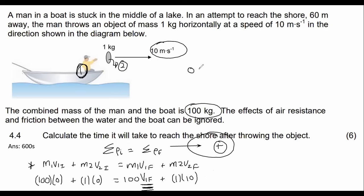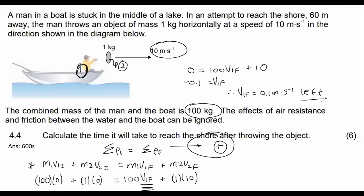Working through the equation: 0 = 100·V1f + 1·(10), giving V1f = −0.1 m/s. Therefore, the man and boat move at 0.1 meters per second to the left. Since there's no friction and no other forces acting on them, their velocity remains constant at 0.1 m/s, and they need to cover a total distance of 60 meters.